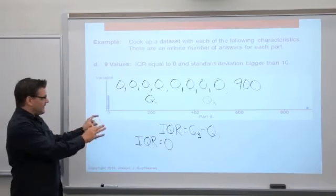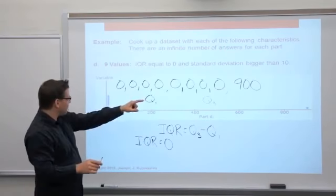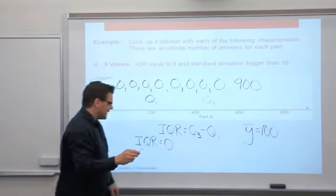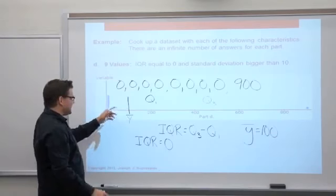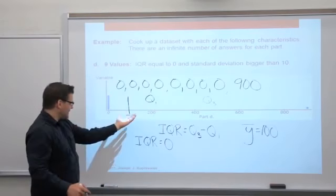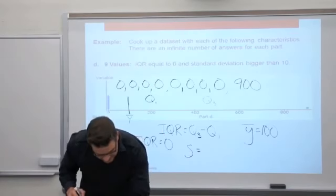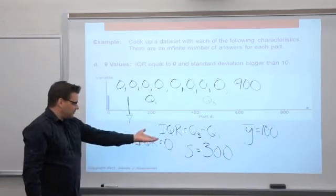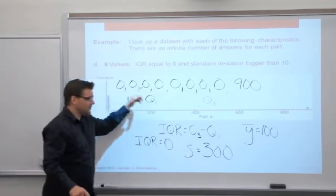Standard deviation is like the average distance to the mean. I picked 900 because 900 divided by nine gives a mean of 100. All of the zeros are 100 away from the mean, and the 900 is 800 away. The standard deviation is 300 on the dot — so on average the data points are 300 units away from the mean. But IQR is equal to zero because in the center, all those numbers are the same.